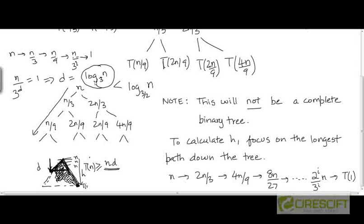But anyway, so having computed that d is log of n to the base 3, if we substitute log of n to the base 3 over here, we can estimate that the total cost, T of n, will be at least n times log of n to the base 3.